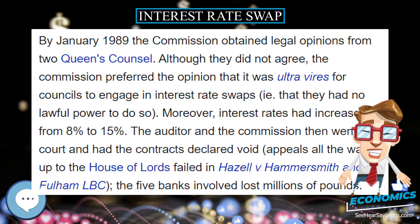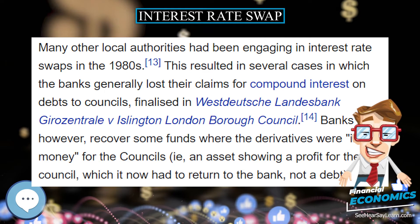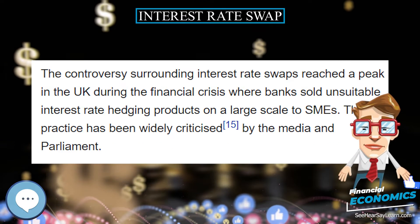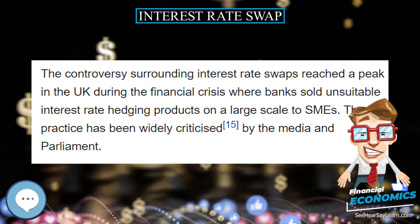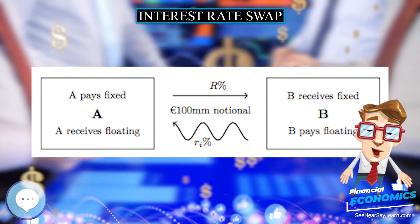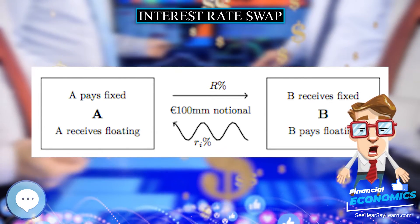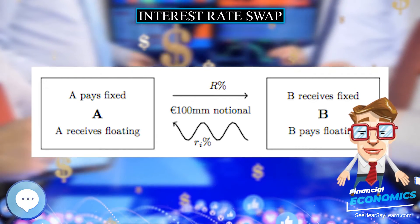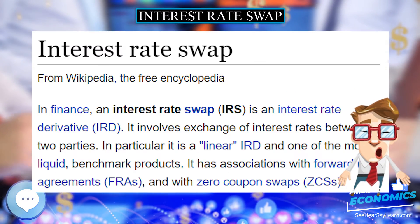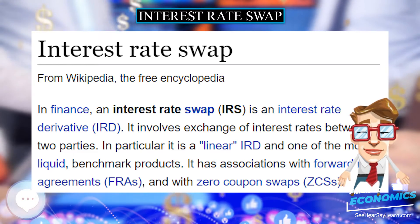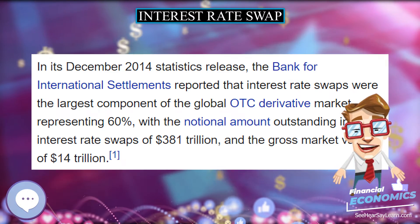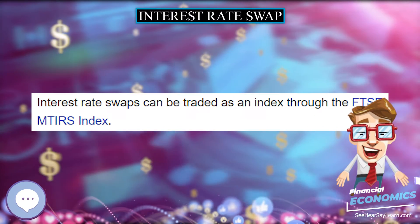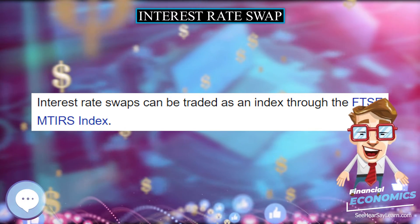Fixed leg versus fixed leg swaps are rare and generally constitute a form of specialized loan agreement. Float leg versus float leg swaps are much more common. These are typically termed single currency basis swaps (SBSs). The legs on SBSs will necessarily be different interest indexes, such as 1M LIBOR, 3M LIBOR, 6M LIBOR, SONIA, etc. The pricing of these swaps requires a spread — often quoted in basis points — to be added to one of the floating legs in order to satisfy value equivalence.